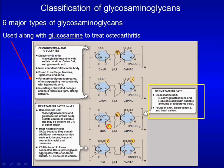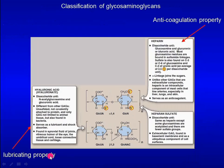Dermatan sulfate builds up in Hunter and Hurler syndrome. Hyaluronic acid is unique because it does not contain any sulfate group. It serves as a lubricant.